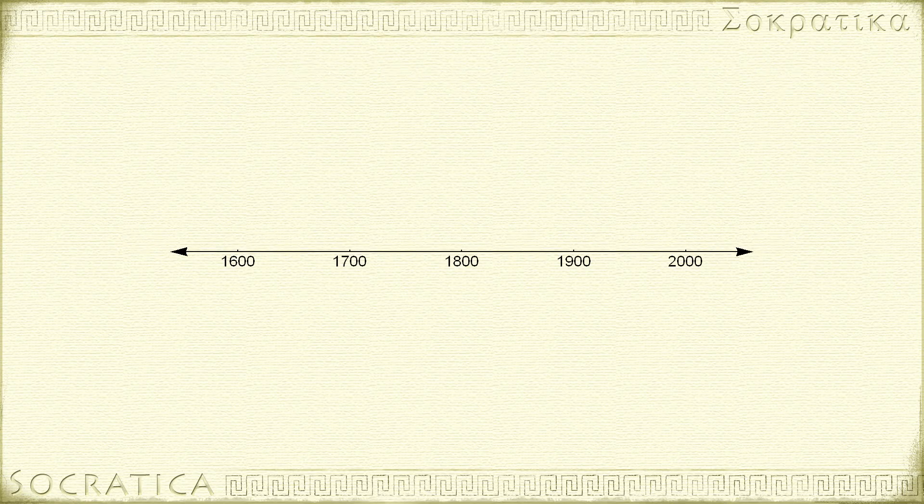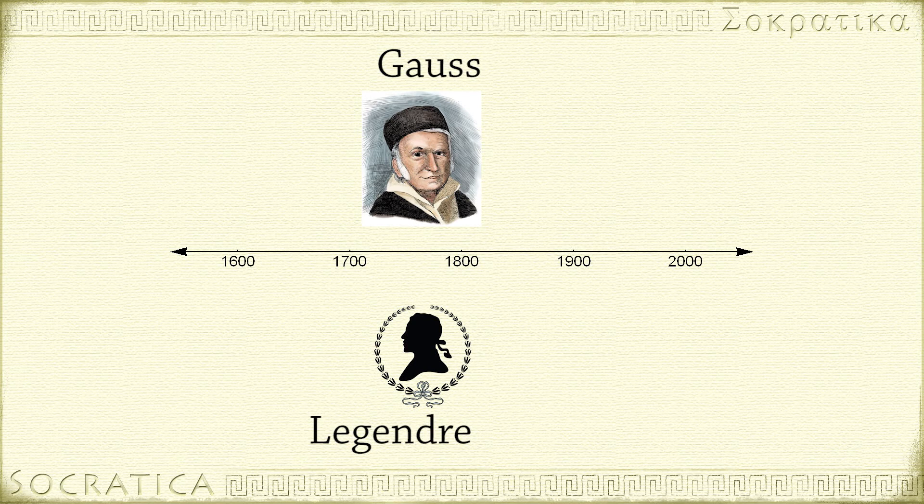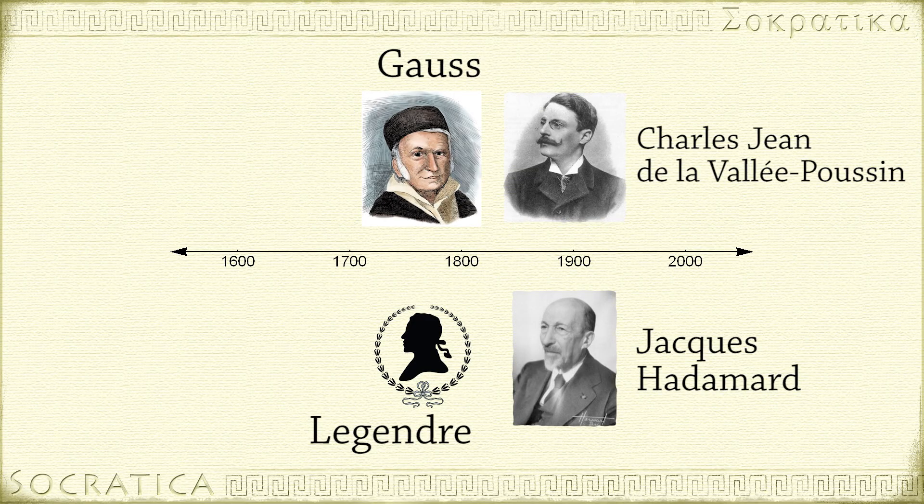The prime number theorem was independently conjectured by Gauss and Legendre in the late 1700s. But it took the work of many mathematicians another hundred years before it was independently proven to be true by Hadamard and de la Vallée-Poussin in 1896.